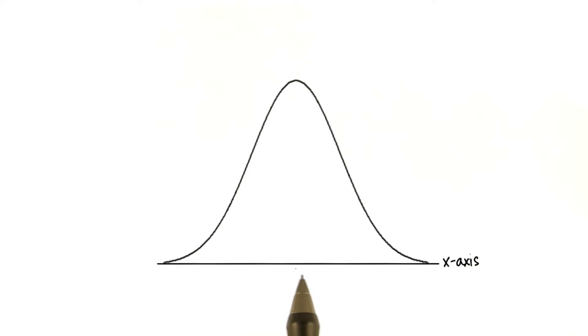The location of particular values on the x-axis is often described in terms of standard deviations. Here you can see this is the mean, this is the mean plus one standard deviation, this is the mean plus two standard deviations, and likewise this is the mean minus one standard deviation and minus two standard deviations.